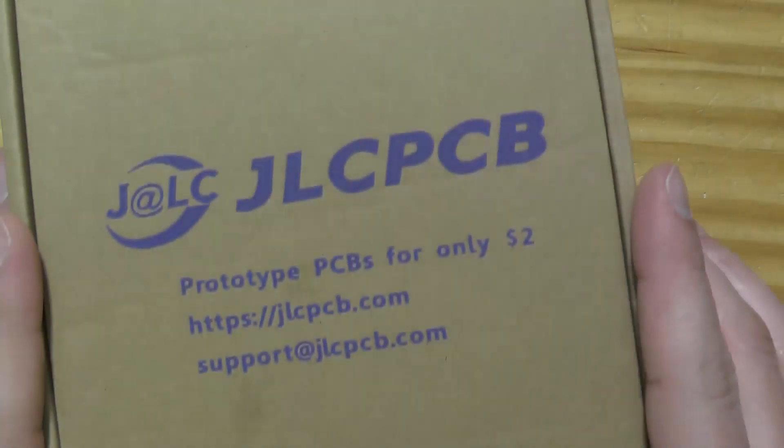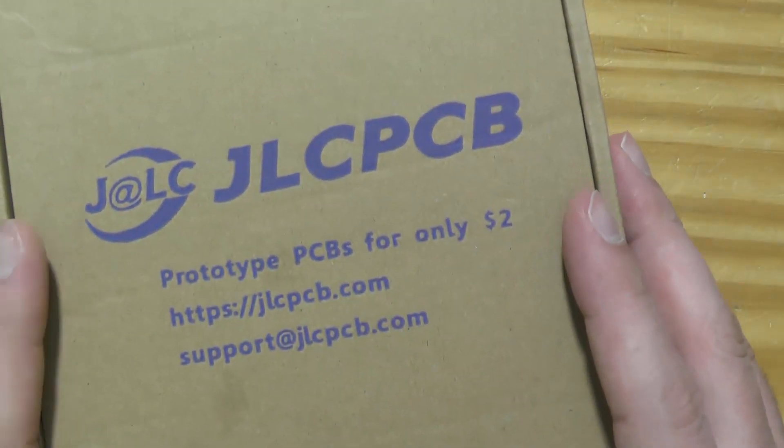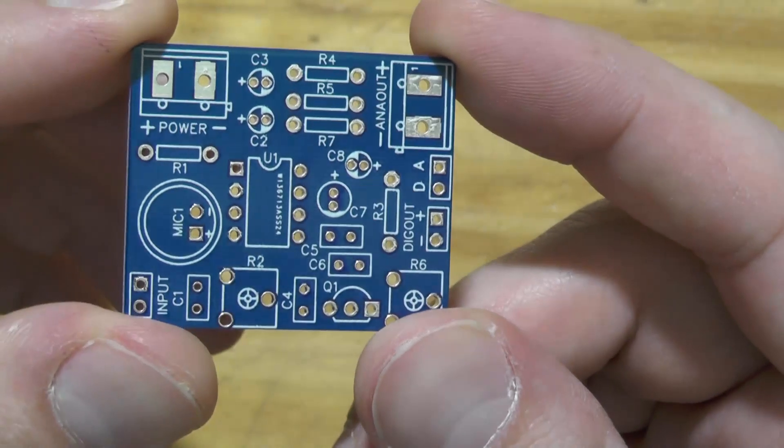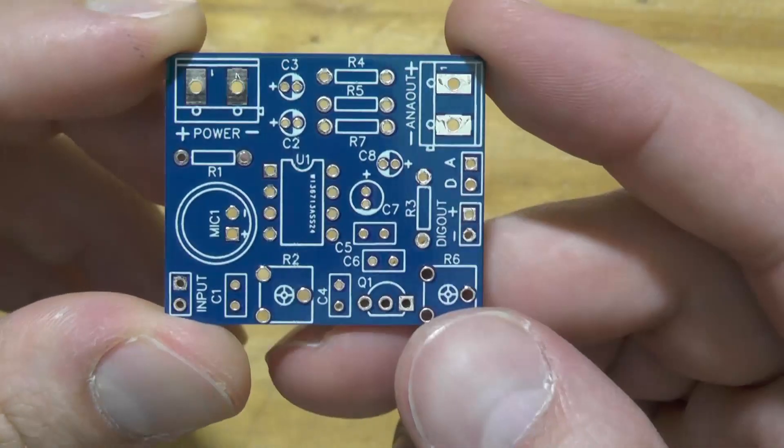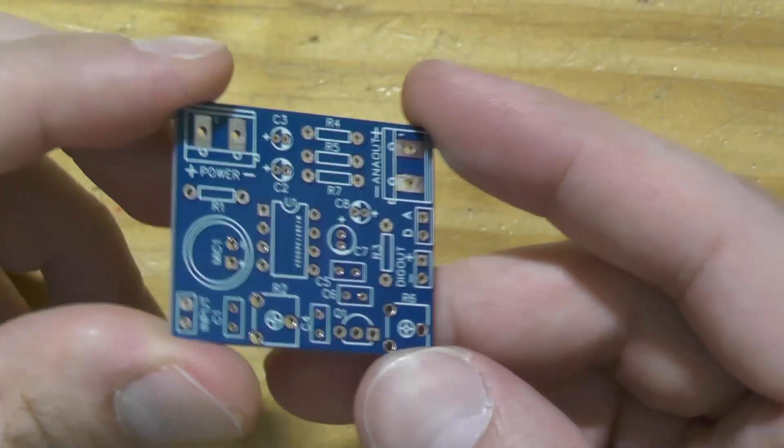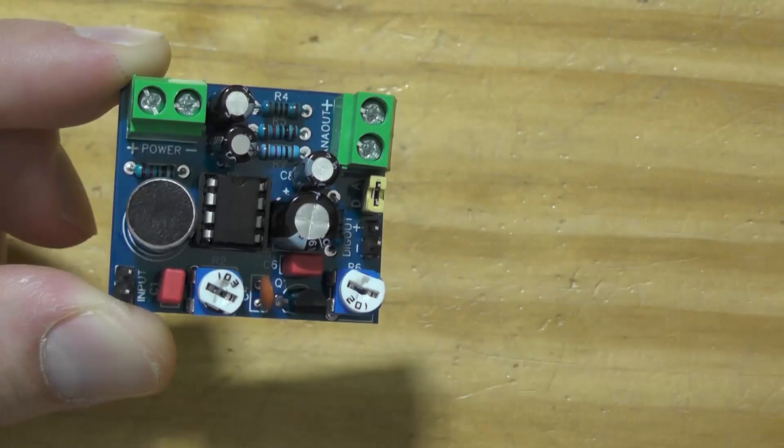I got my stuff. Let's check what's in the box. Here is my circuit - very high quality as usual from JLC PCB. Now let's solder it and find out if it's working or not.